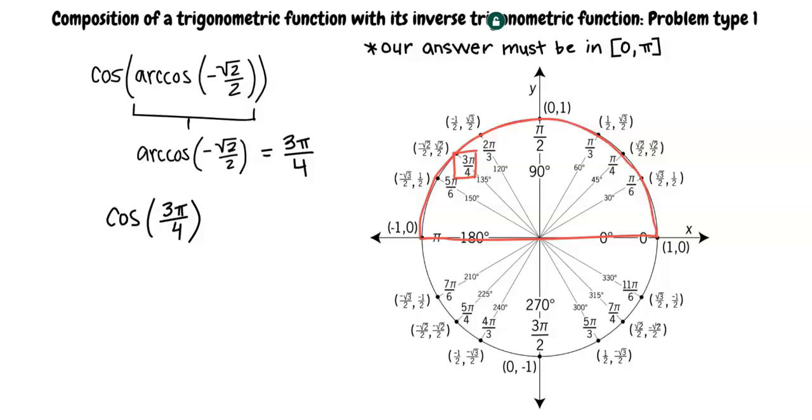Since cosine and arc cosine are inverses of each other, do they cancel each other out? That's a good question. This problem may lead you to think this is true, however this is not always the case. Let's look at another example that disproves this theory.